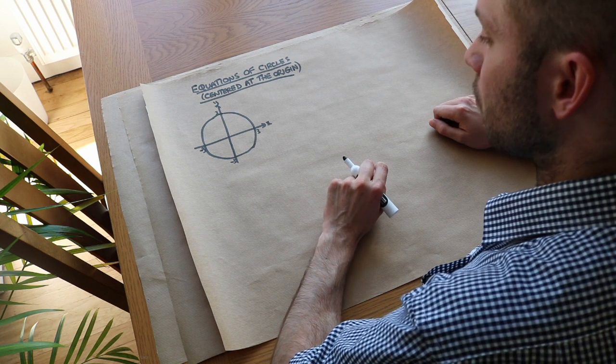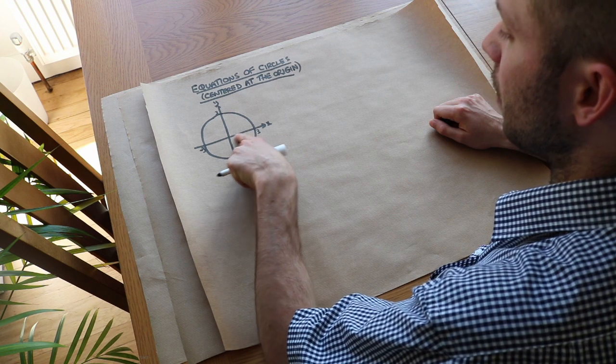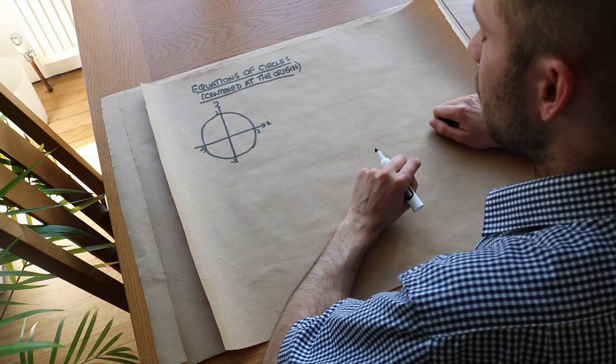So we can see that it has a radius of 3 because the distance from the center to the circumference of the circle is 3. That distance is 3. So we need an equation for it.